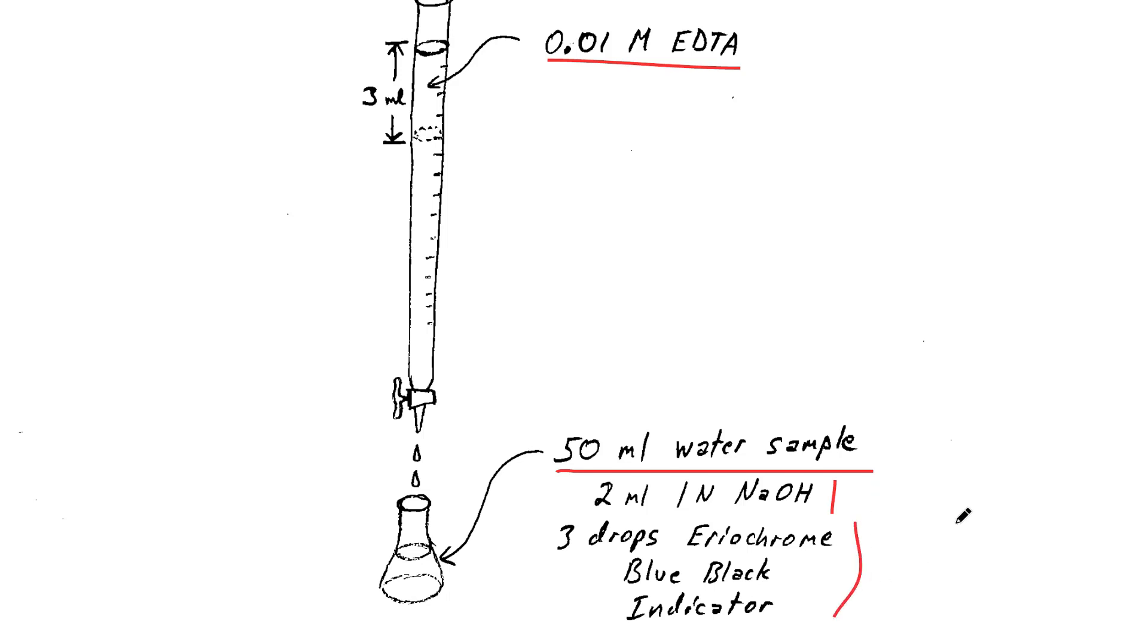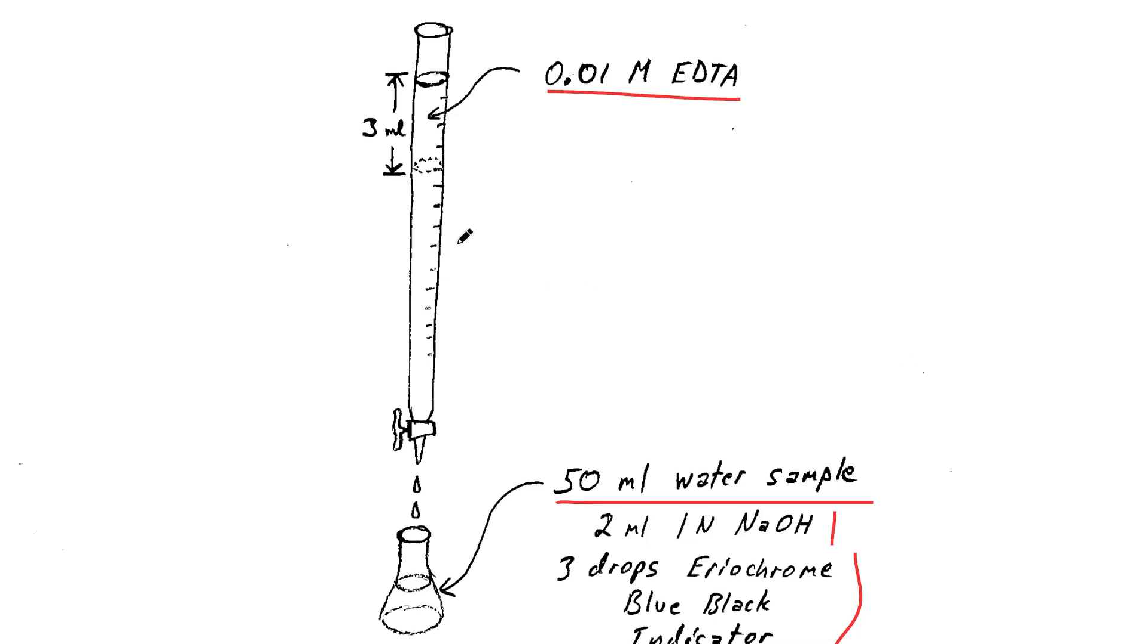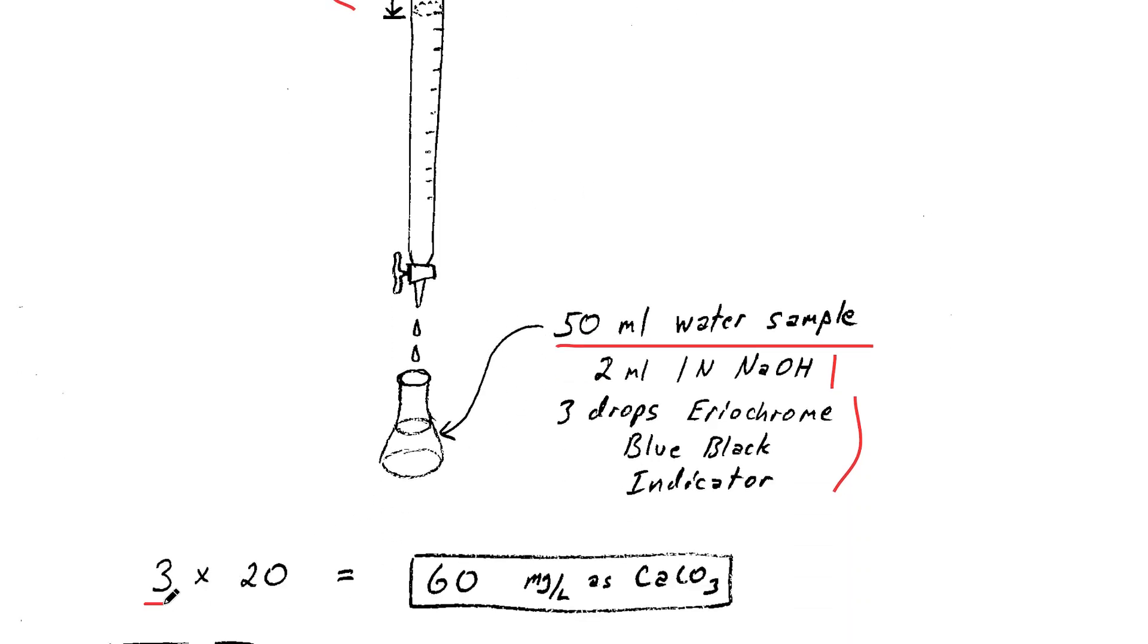It looks pink at the beginning if there's calcium because of this Eriochrome Blue-Black indicator that we've added. So in this case, we've dropped 3 milliliters of the EDTA solution into our sample, and we can take that 3 milliliters multiplied times 20, and we get 60 milligrams per liter as calcium carbonate. Done.